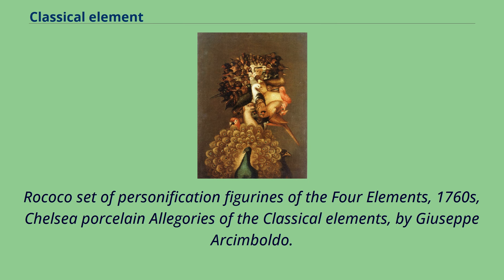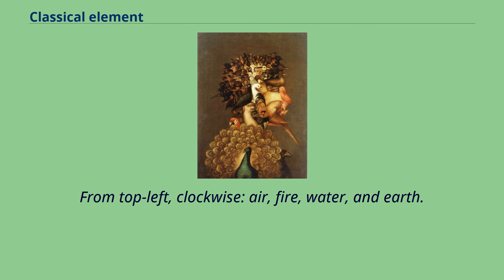Rococo set of personification figurines of the four elements, 1760s, Chelsea porcelain allegories of the classical elements by Giuseppe Arcimboldo. From top left, clockwise: air, fire, water, and earth.